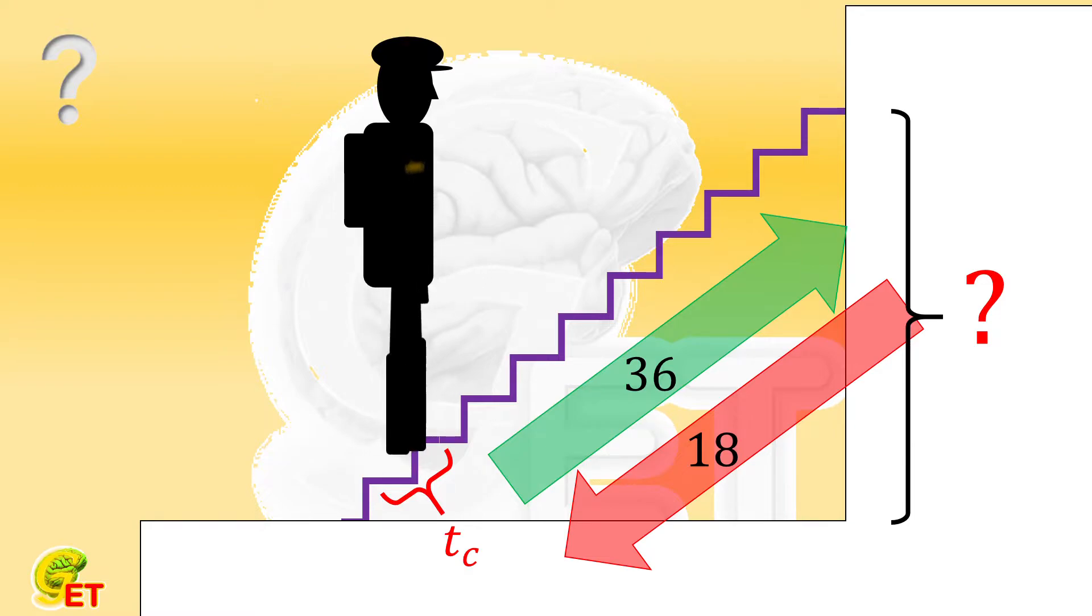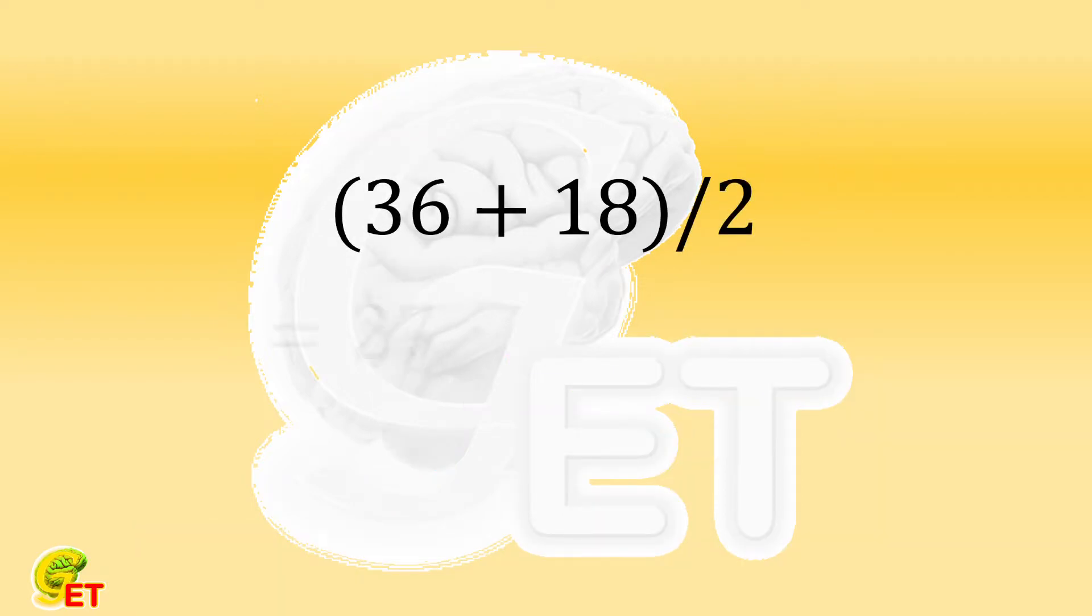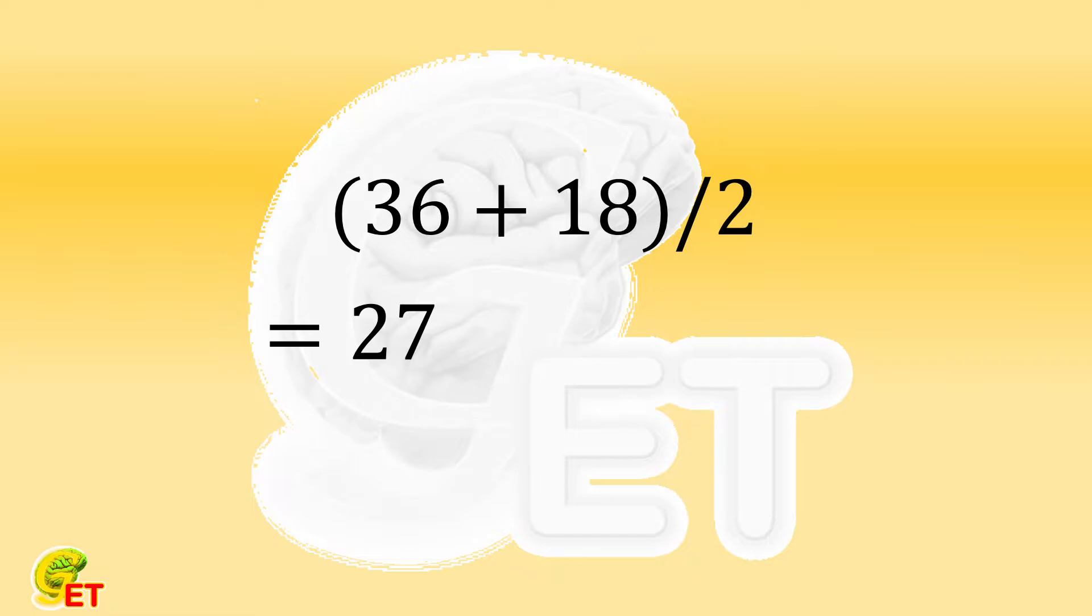First, let's clarify that this is not a problem of calculating arithmetic mean. If you calculate the arithmetic mean of 36 and 18, which equals 27, the answer is not correct. Then what is the correct answer?